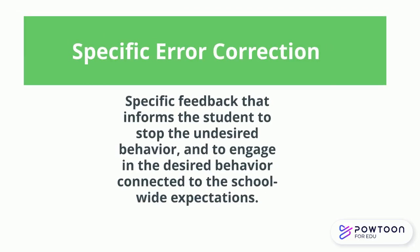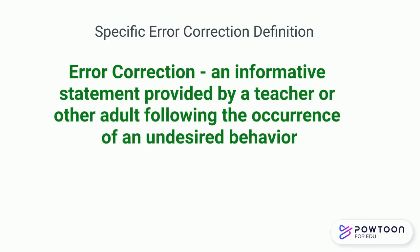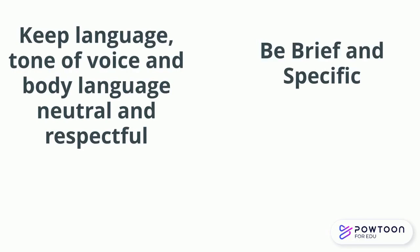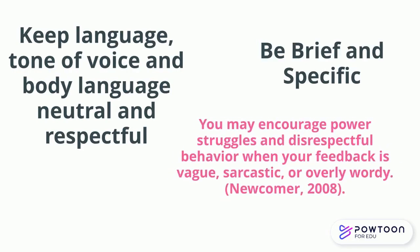Let's key in on specific error correction. When you are giving specific error correction, you're giving specific feedback to inform the student to stop undesired behaviors and how to engage in the desired behavior, connecting that to your school-wide and classroom expectations. The error correction is an informative statement provided by a teacher or another adult following the occurrence of an undesired behavior. It is important to keep your language, tone of voice, and body language neutral and respectful, and to be brief and specific. You can encourage power struggles and disrespectful behavior when your feedback is vague, sarcastic, or wordy.